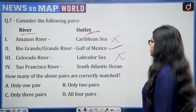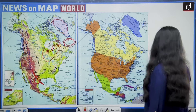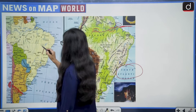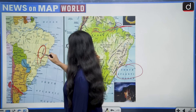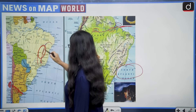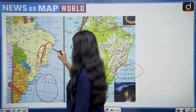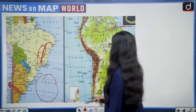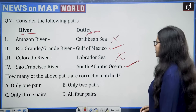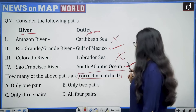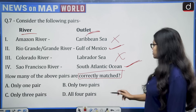Fourth pair: São Francisco River — South Atlantic Ocean. The São Francisco River lies through Brazil, and it opens into the South Atlantic Ocean. So this pair is correct. The correctly matched pairs are second and fourth, meaning only two pairs — so option B is correct.